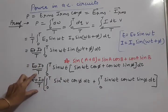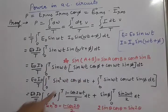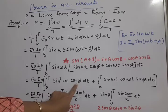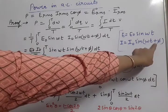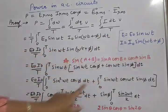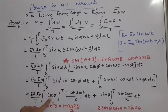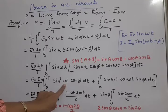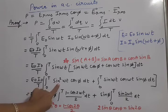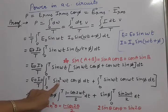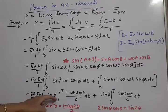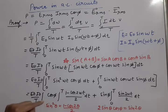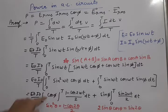Now, cos φ is not depending on time - it is a constant phase angle. So cos φ is taken out of the integration, leaving sin²(ωt) inside. We don't integrate sin² directly because of the square term. To remove this, we use the formula: sin²θ = (1 − cos 2θ)/2. Mathematical formulas being used are noted in red pen - you can write them separately.